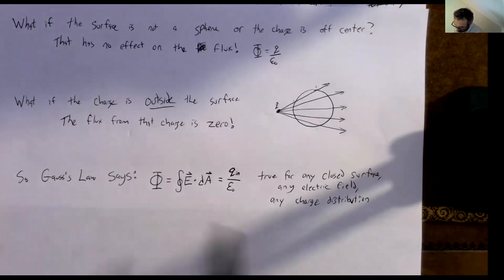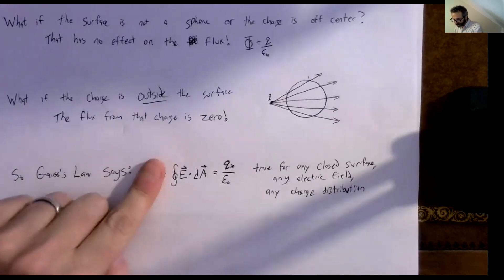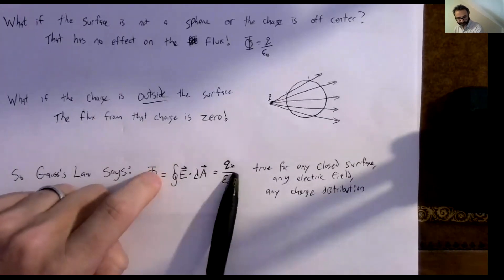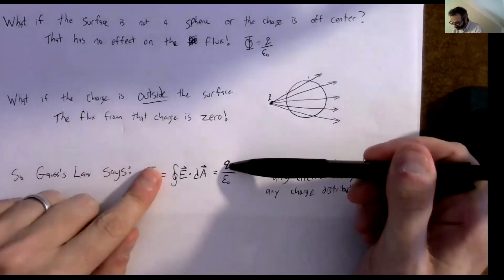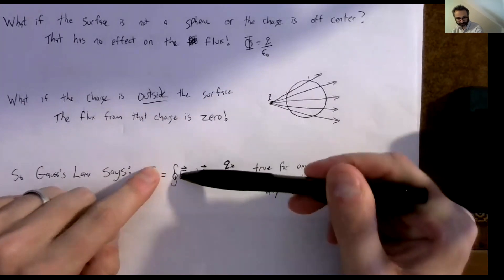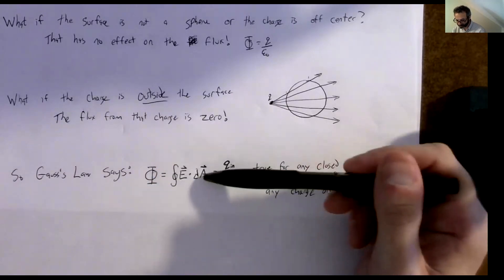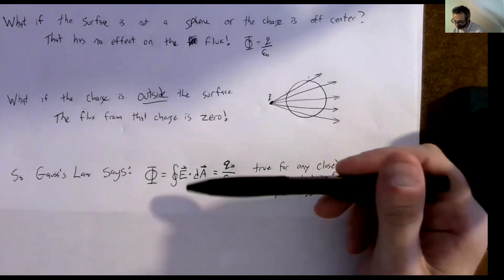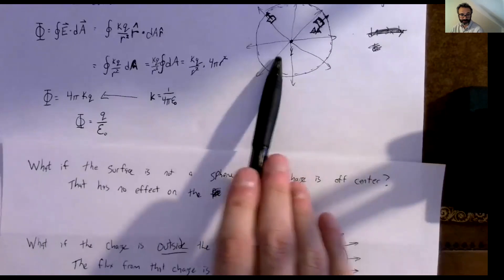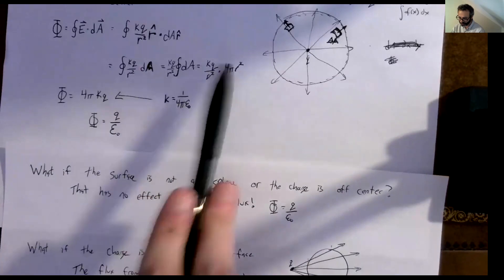So where we'll go with Gauss's Law: we have the equation — the integral of E dot dA equals Q_inside over epsilon-naught. You can see how if we know the charge inside and the area, we can solve for E — but only in very symmetric situations where this integral simplifies down to an easy expression. In general it's a complicated integral we'd never want to do.